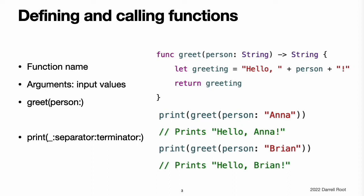The function in this example is called greetPerson because that's what it does. It takes a person's name as input and returns a greeting for that person. To accomplish this, you define one input parameter, a string value called person, and a return type of string, which will contain a greeting for that person. All of this information is rolled up into the function's definition, which is prefixed with the func keyword. You indicate the function's return type with the return arrow — a hyphen followed by a right angle bracket — which is followed by the name of the type to return. The definition describes what the function does, what it expects to receive, and what it returns when it's done, making it easy for the function to be called unambiguously from elsewhere in your code.